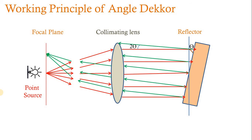The principle is that whatever reflections we get from the workpiece surface, in the angle decker we use two scales — an illuminated scale and a datum scale — and based on those we find the positional difference. The angle decker is a type of instrument that measures by comparing readings obtained from a standard, such as a sine bar or combination of angle gauges, with readings from the work under test. It is a comparator, not an absolute measuring instrument.